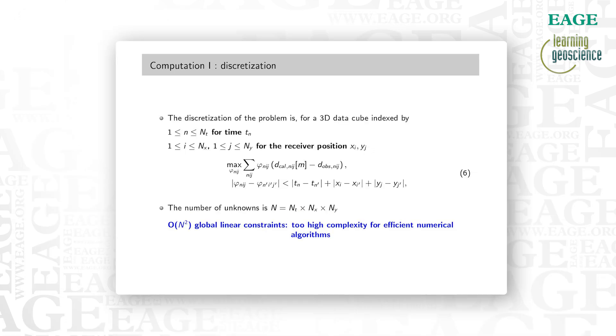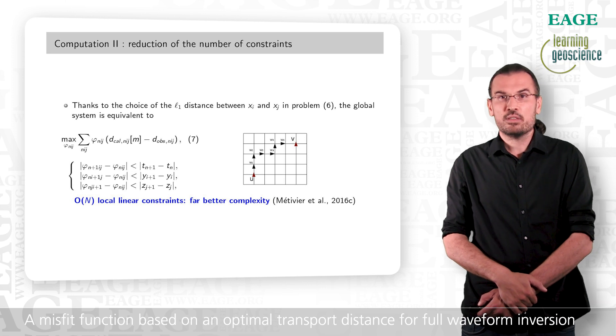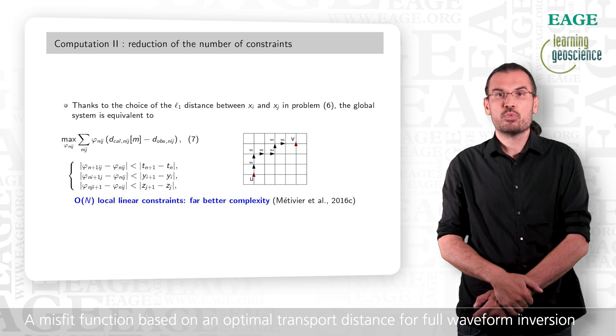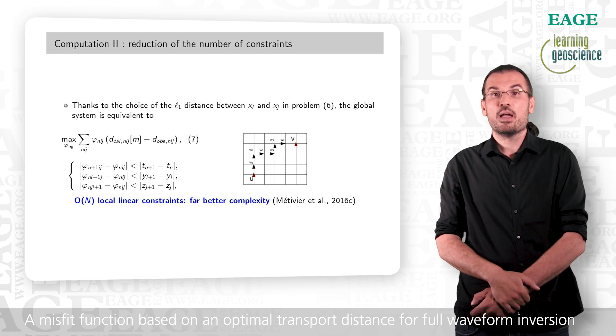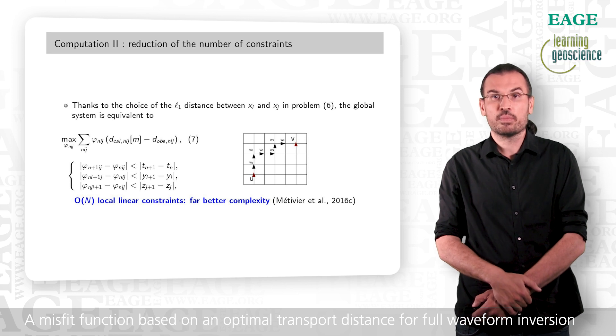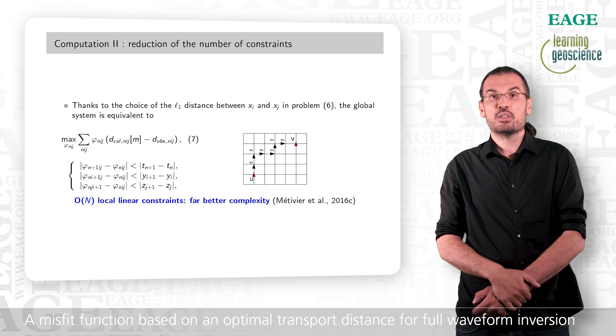We now consider a discretization of this problem for 3D shot gases. Now the index n will represent the time axis, while the indexes i and j will represent the spatial position of a receiver at the surface. The total number of discrete points is n, which is equal to product nt times nx times ni. In this case, the Lipschitz constraints amounts to the definition of n-square constraints, leading to algorithms with complexity at least in n-square. Now we are going to use a property of the L1 distance. Because of the choice we have made, the Lipschitz constraints are expressed in terms of this L1 distance. And we can show in this case that the set of n-square constraints we have are actually equivalent to a set of 3N local constraints. This is due to a simple Manhattan property of the L1 distance. But this opens the possibility to design much more efficient algorithms in this case.